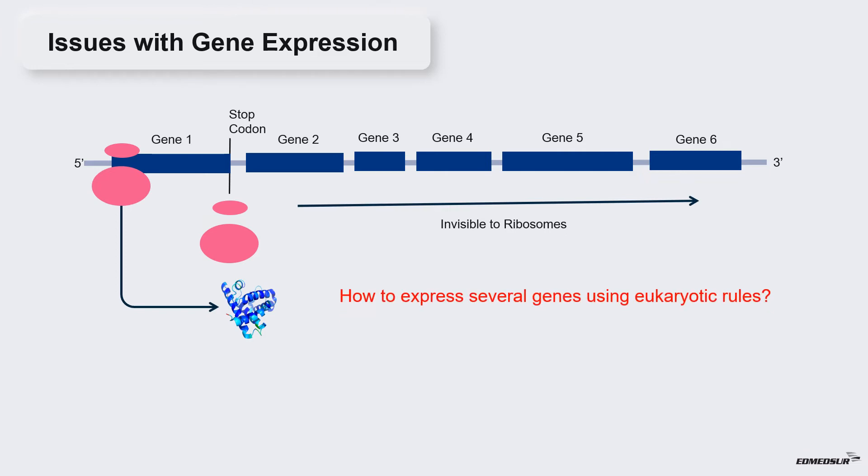At least three well-known solutions have been observed in SARS-CoV-2 which help it overcome the problem of expressing several proteins using eukaryotic rules of gene expression and translation. They are polyprotein and proteolysis, programmed ribosomal shifting and subgenomic RNAs.